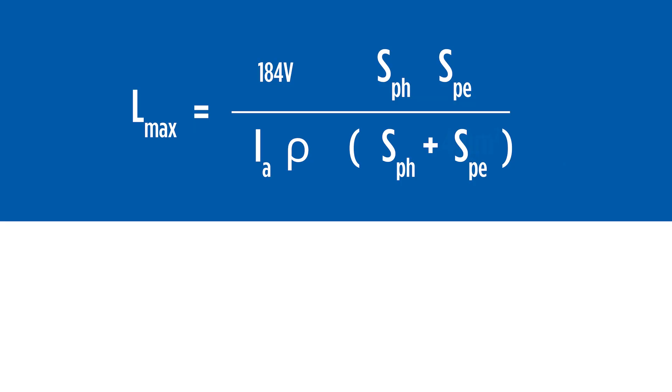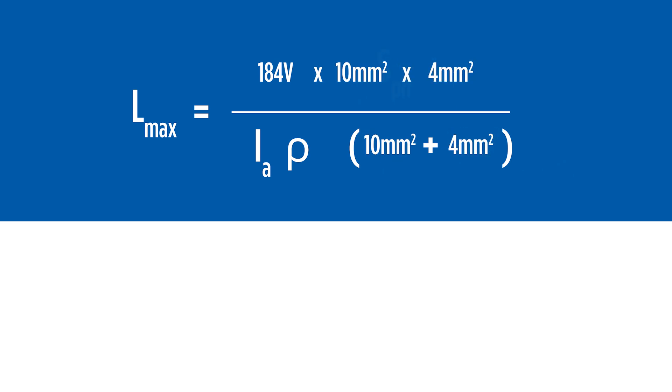When considering cables of 4 millimetres squared and above, earthing conductors will have a smaller cross-sectional area than the active conductor. As an example, a 10 millimetre squared cable will have a 4 millimetre squared earth wire.